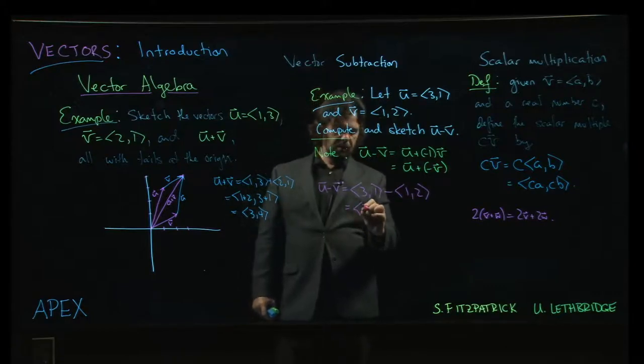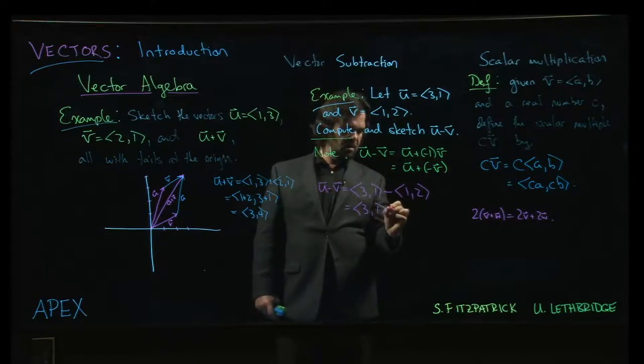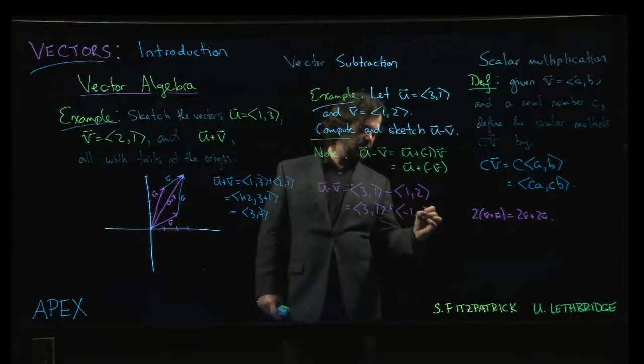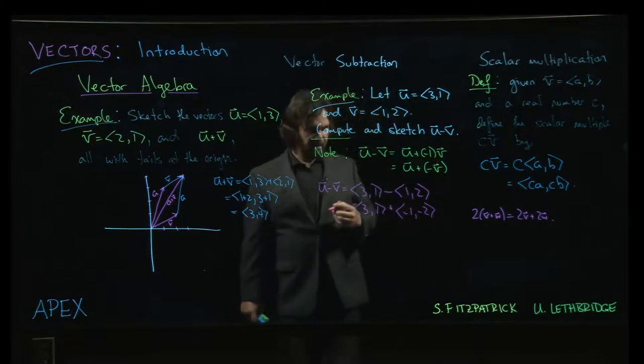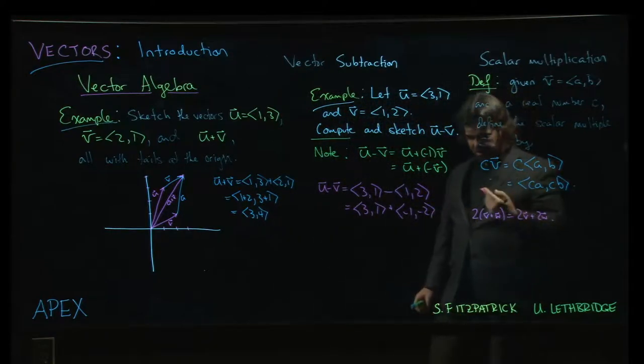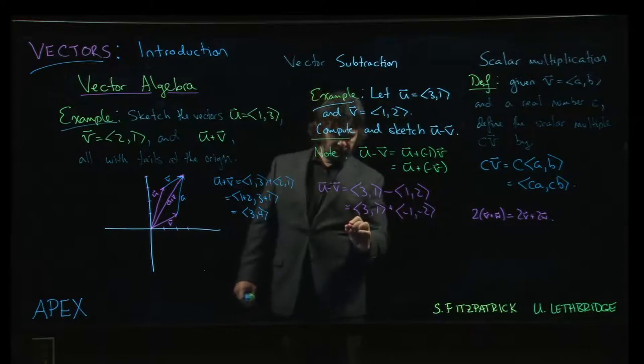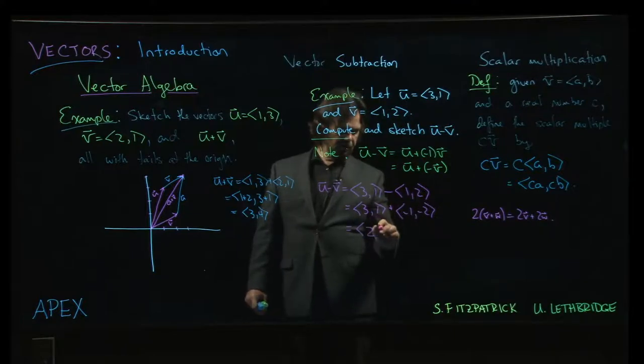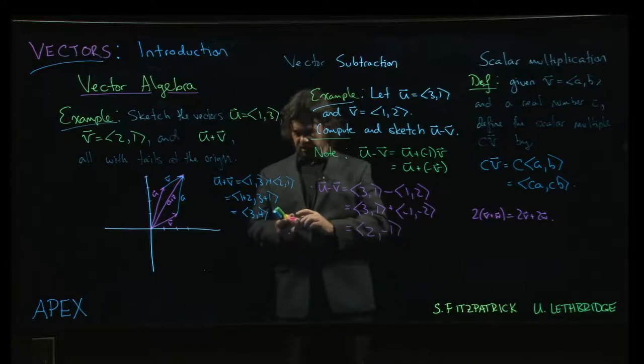to first push the negative in, do minus 1, minus 2, and then add. It reduces the number of sign errors that you make sometimes. So now we do 3 plus minus 1, so 3 minus 1 gives me 2. 1 plus minus 2, 1 minus 2 gives negative 1.